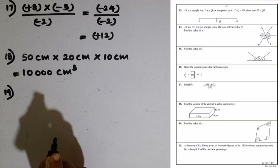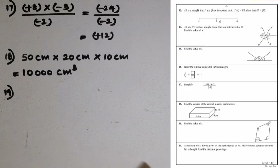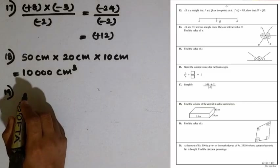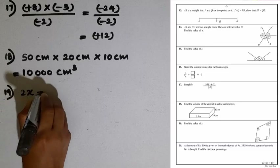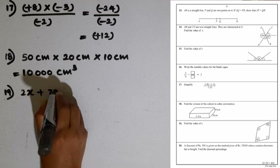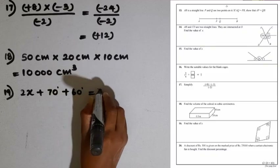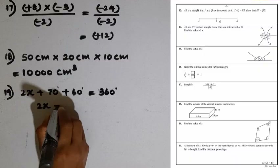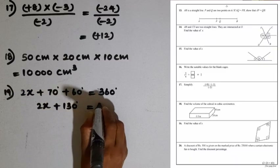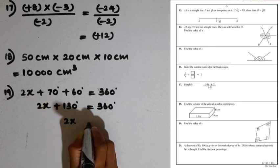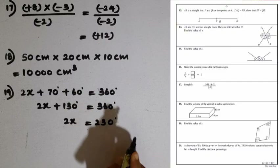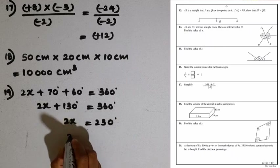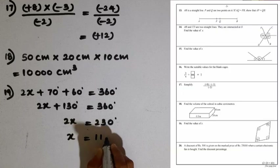Question number 19: find the value of x. A quadrilateral is given, and the interior angle sum of a quadrilateral is 360 degrees. We write: x plus x plus 70 plus 60 equals 360, giving 2x plus 130 equals 360. So 2x equals 360 minus 130, which is 230 degrees. Dividing by 2, x equals 115 degrees.